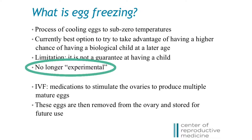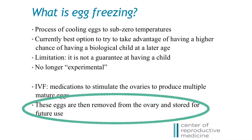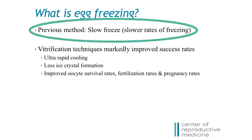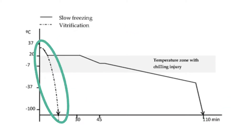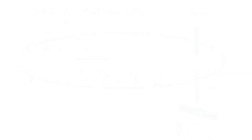Until 2012, egg freezing was considered experimental. However, data over the past decade and a half has been reassuring in terms of safety, and therefore it is no longer considered experimental. The process involves undergoing IVF, which involves taking medication to stimulate the ovaries to produce multiple mature eggs, then undergoing a minor surgical procedure called an egg retrieval to remove those eggs, and then the mature eggs will be frozen for future use. Previously, eggs and embryos were frozen with a method called slow freeze. The advent of vitrification has revolutionized the technology of egg freezing. Vitrification is a process of using ultra-rapid cooling to solidify the cells into a glass-like state without the formation of ice crystals, and has been shown to significantly improve survival rates, pregnancy rates, and fertilization rates compared to the previously used slow freeze method.